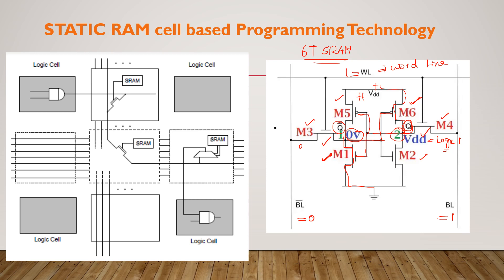That is the way we can write data. If you want to read the data, similarly you apply the word line equal to 1, and whatever data is stored in Q and Q bar can be seen on the bit line and bit line bar. We can write and read data from the Q and Q bar nodes.